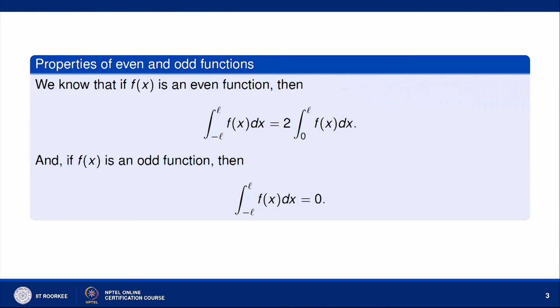We already know that if f is an even function, then the integral from -l to +l of f(x) dx equals 2 times the integral from 0 to l of f(x) dx. And if f is an odd function, then the integral from -l to +l of f(x) dx is simply 0. This follows from properties of definite integrals.